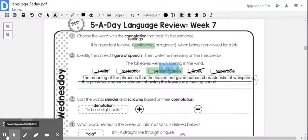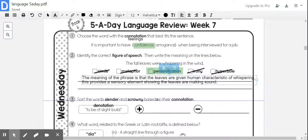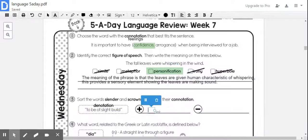All right. Number three. It says sort the words slender and scrawny based on their connotation. Again, connotation has to do with feelings, and it can be positive or negative. Both of the words have the same denotation, which means their dictionary definition for both of those words is to be of slight build. Now, the positive word or the positive connotation would be slender, whereas the negative one would be scrawny.